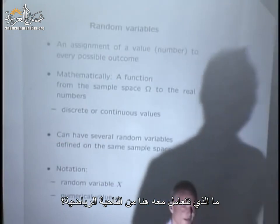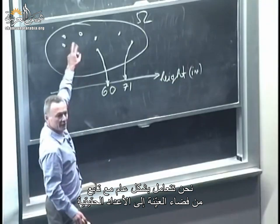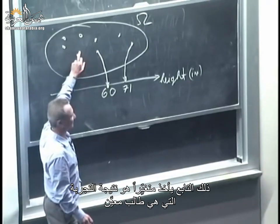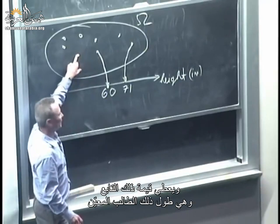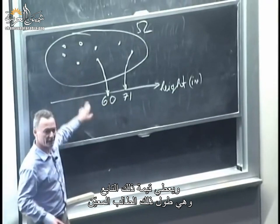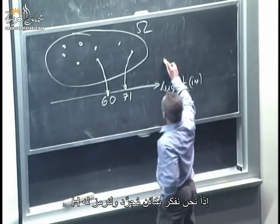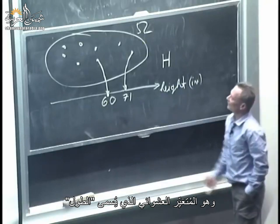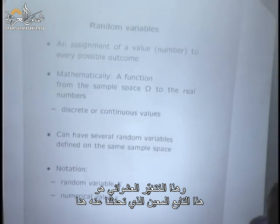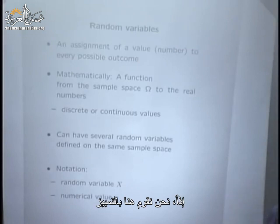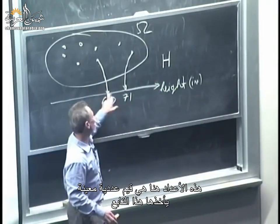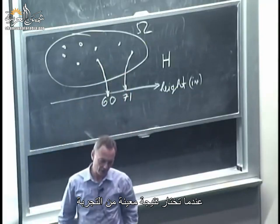Mathematically, we're dealing with a function from the sample space into the real numbers. That function takes as argument an outcome of the experiment — a typical student — and produces the value of that function, which is the height of that particular student. We denote this abstract object by capital H, the random variable called height, which is essentially this particular function.